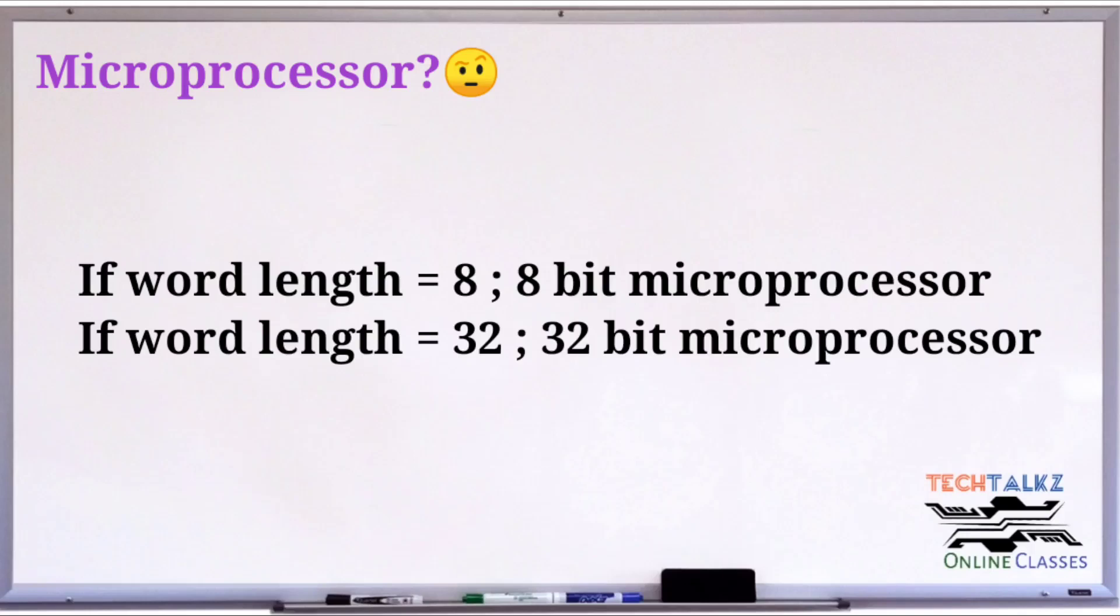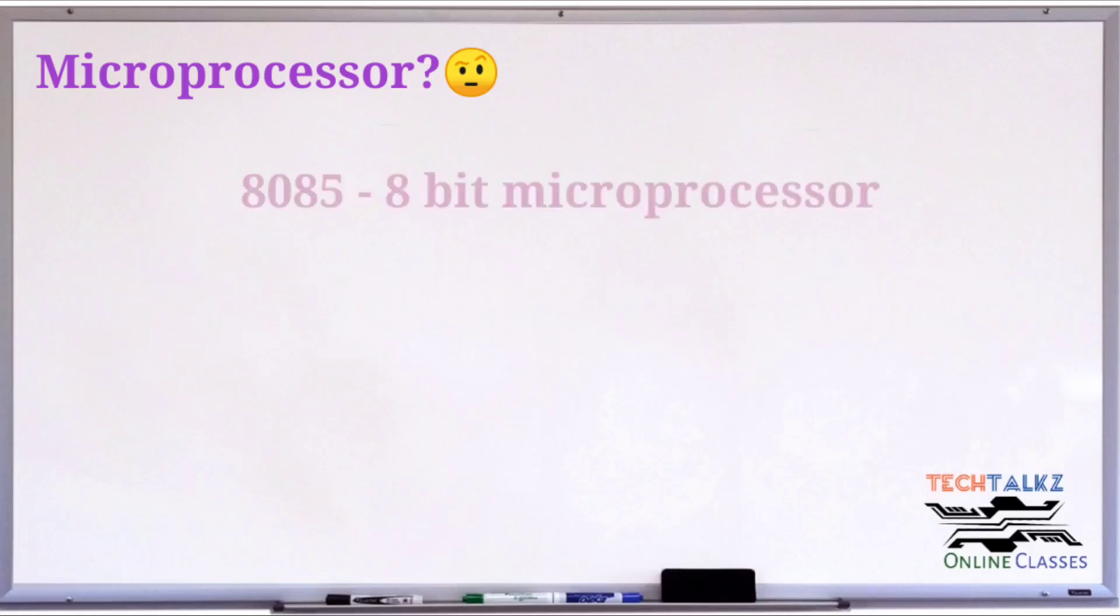A processor with an 8-bit word is known as an 8-bit microprocessor. A processor with a 32-bit word is known as a 32-bit microprocessor. In our syllabus, we use 8085 and 8086 microprocessor. 8085 is an 8-bit microprocessor.